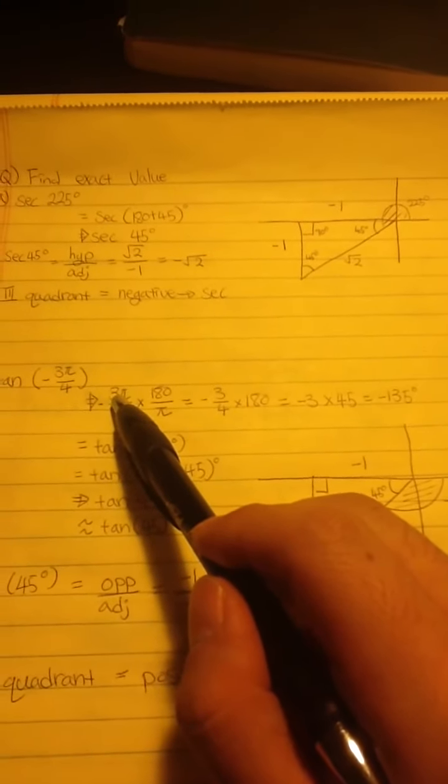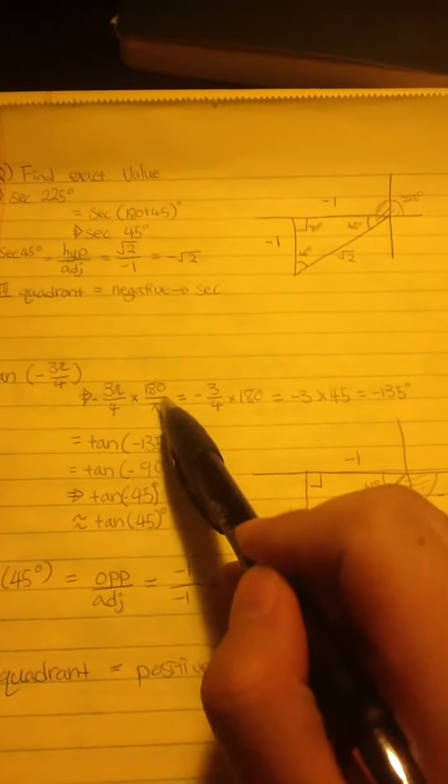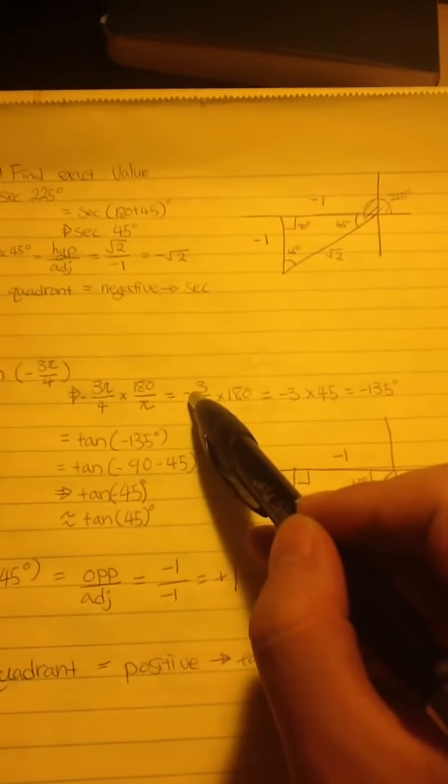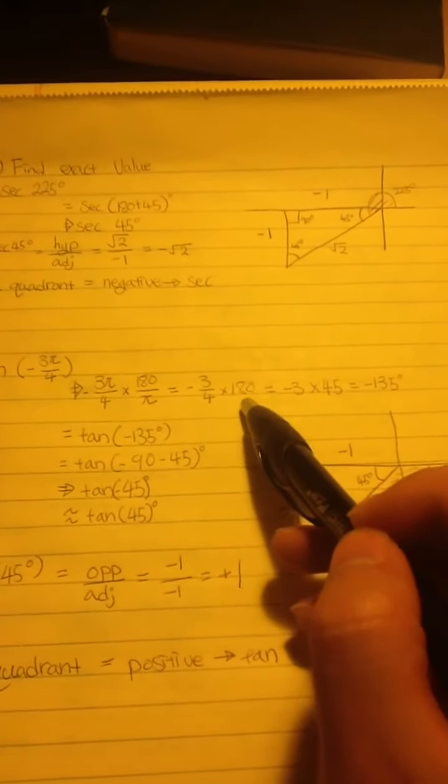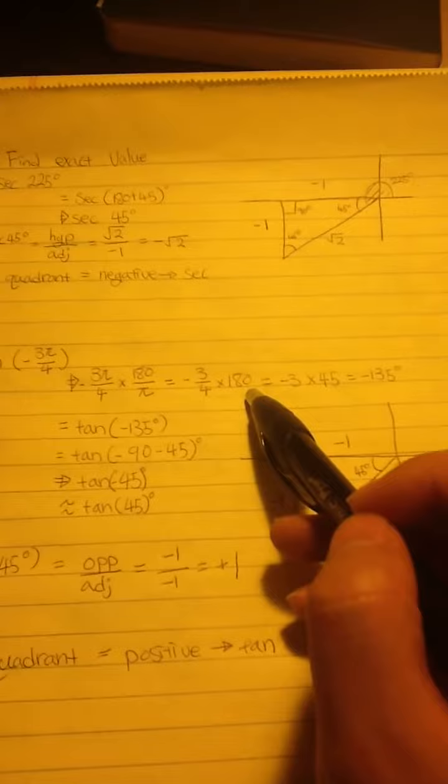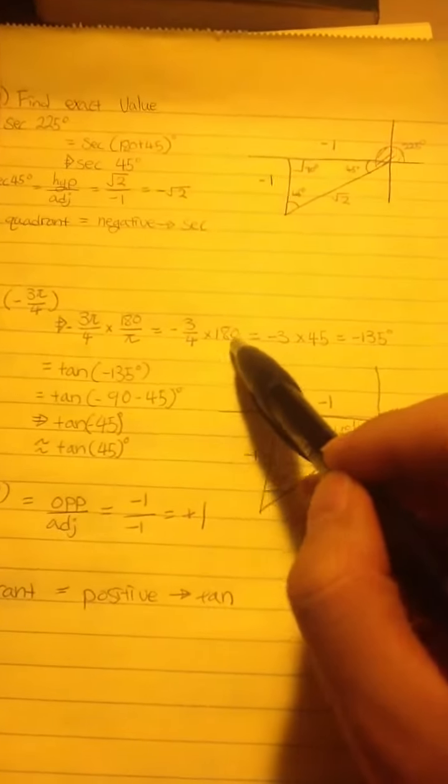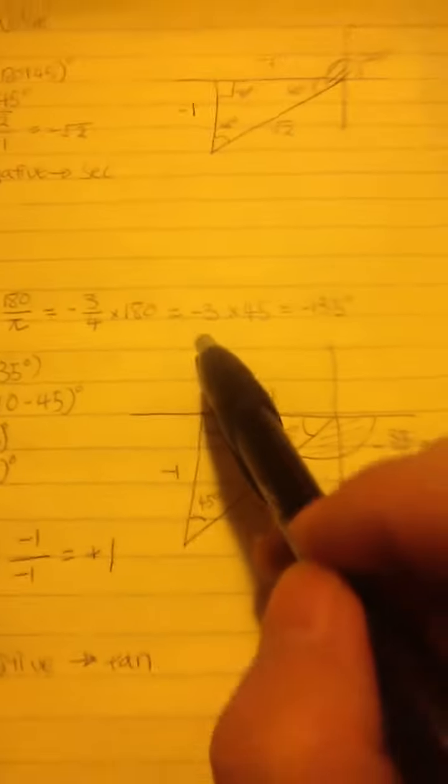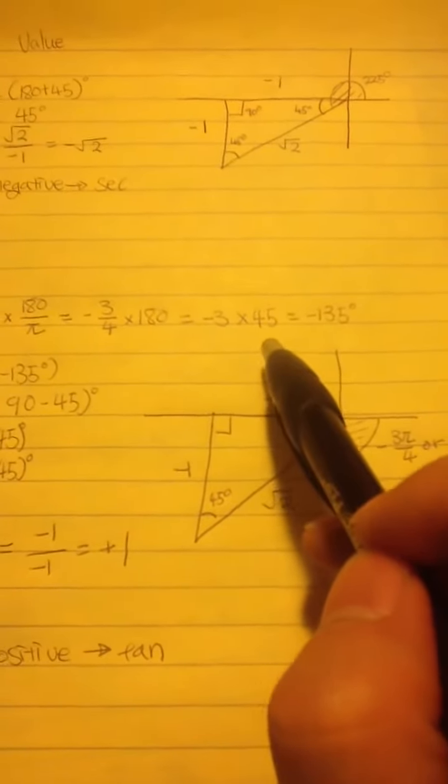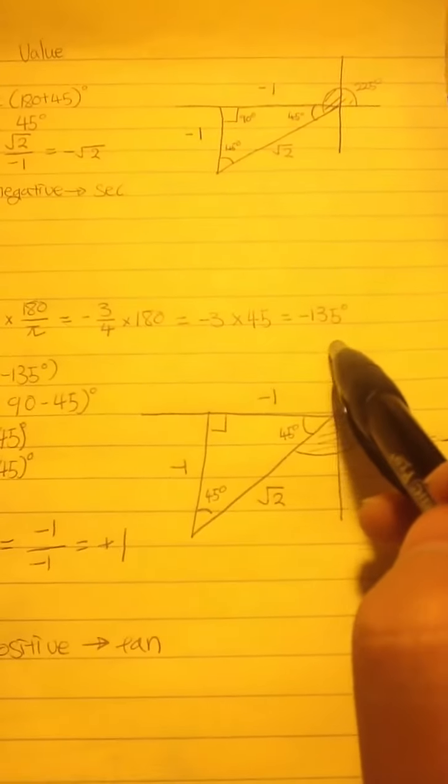I cancel the π first, like this. So I got negative 3 over 4 multiplied by 180, and then I divide 180 by 4. So that's why I got rid of 4 here. And here I got negative 3 multiplied by 45, which is negative 135 degrees.